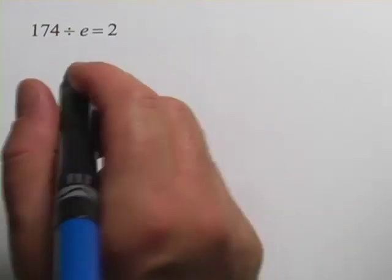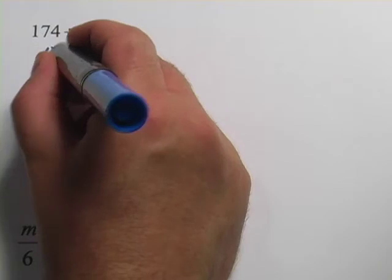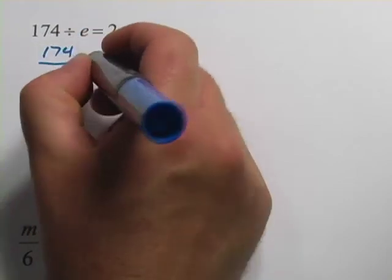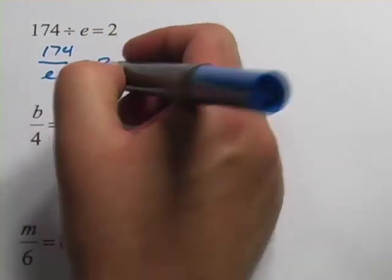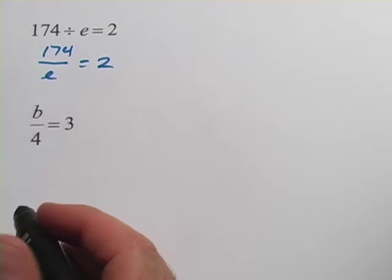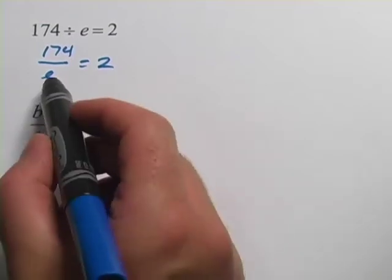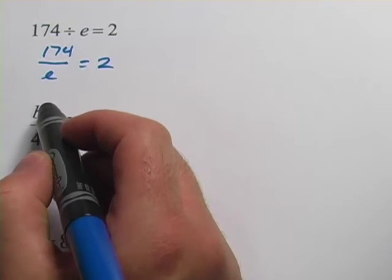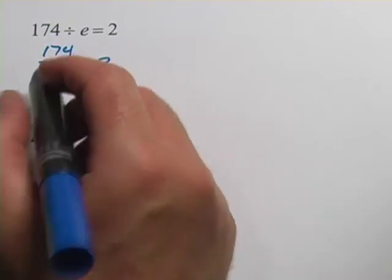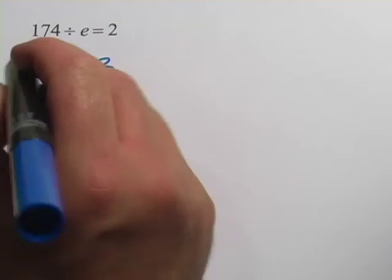So I'm going to rewrite this: 174 divided by e equals 2. Now if we wanted to do this as an algebra problem, it gets pretty tricky. We have the e on the bottom of the fraction. So the first thing we would do is multiply both sides by e to get it up off the bottom.